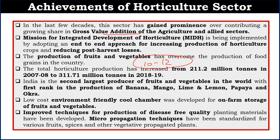India is the second largest producer of fruits and vegetables in the world, and India is the top producer in banana, mango, lime, lemon, papaya and okra. A low-cost, environment-friendly cool chamber for on-farm storage of fruits and vegetables was also developed — this is one of the major achievements. Techniques have been improved and disease-free quality planting material has been developed. Micropropagation techniques have been developed to standardize the production of fruits, spices and vegetatively propagated plants.